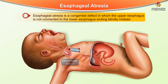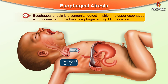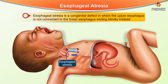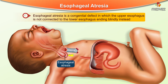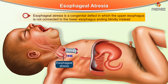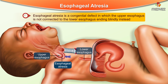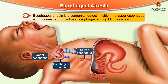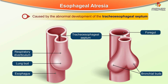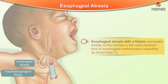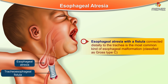Esophageal atresia is a congenital defect where there is a defective or absent continuation of the upper esophagus to the lower esophagus, thereby ending blindly instead. It is caused by an abnormal development of the tracheoesophageal septum. Esophageal atresia with a fistula connected distally to the trachea is the most common kind of esophageal malformation, classified as gross type C.